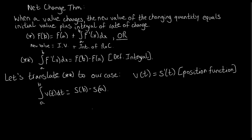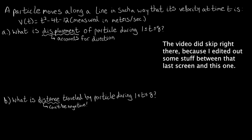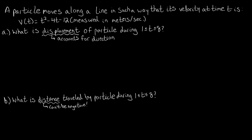We're going to take the integral of our velocity function over the interval one to eight, which gives us values for our position function at b and at a. Net change accounts for negative values automatically — there's no guarantee the integral value will be positive or negative, so that's essentially giving us displacement. We won't know if that value is positive or negative until after we've evaluated it.